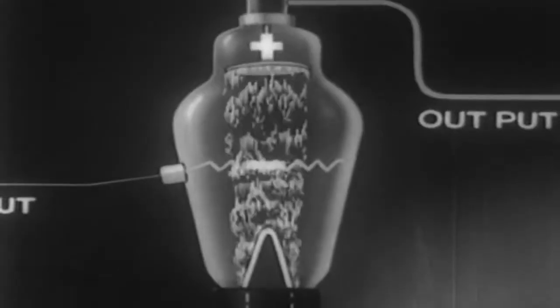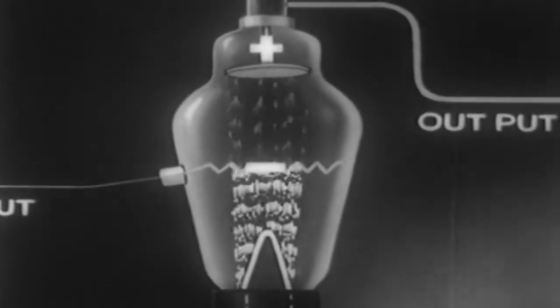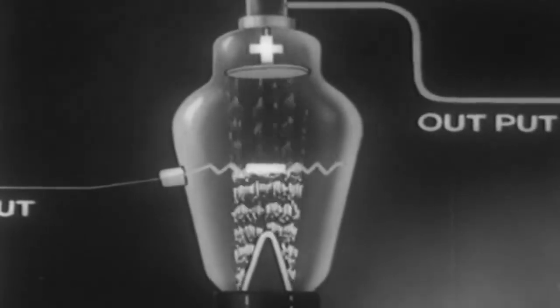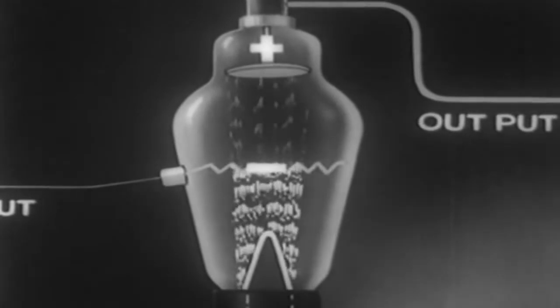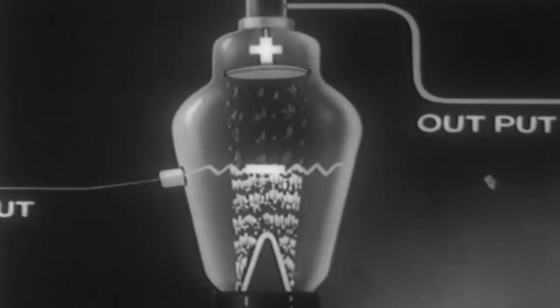Every time a negative potential is impressed on the grid, even though it be very minute, it has a large effect in reducing the number of the negatively charged electrons which would otherwise keep flying from cathode to anode.